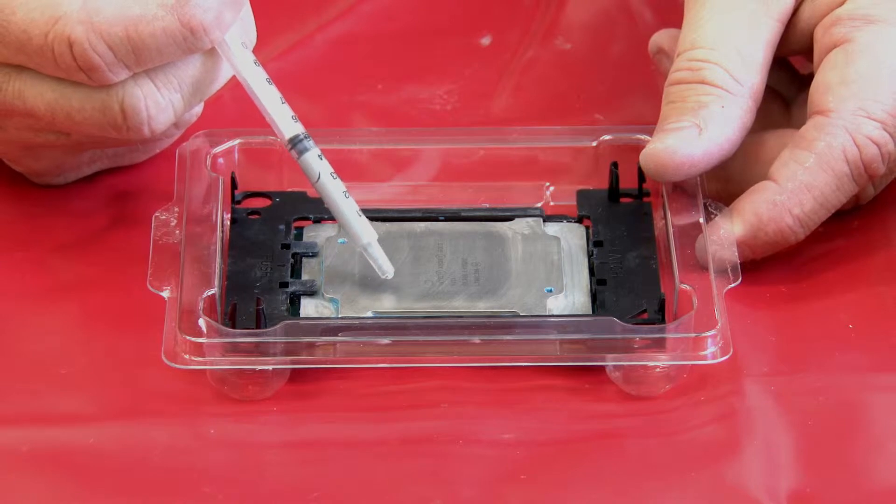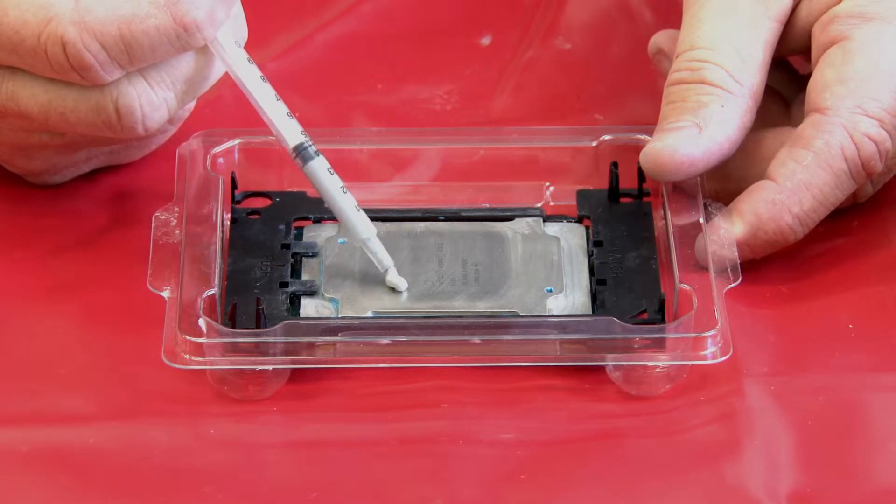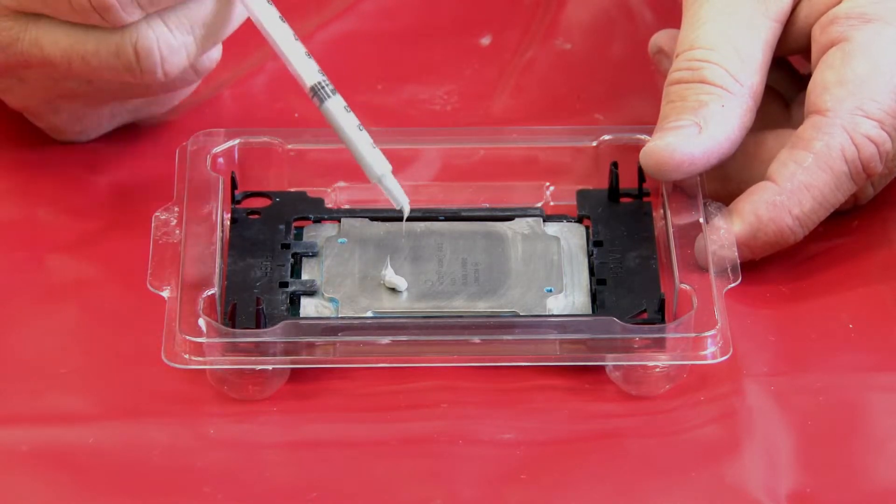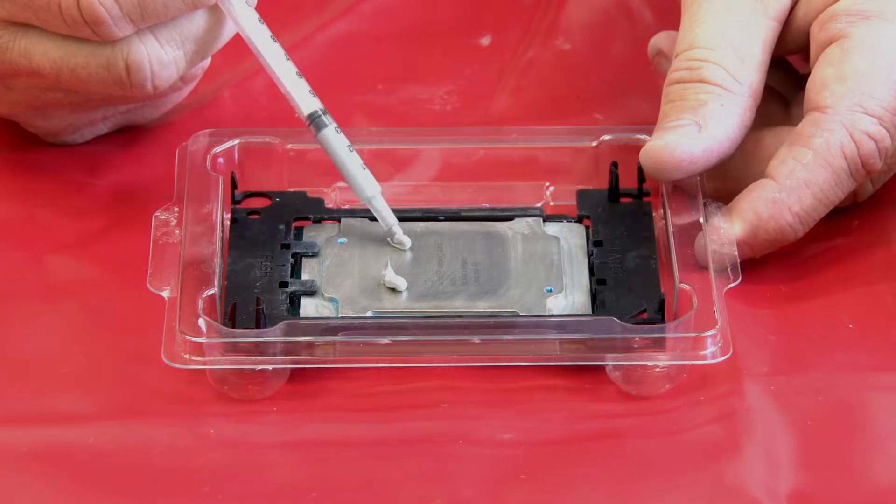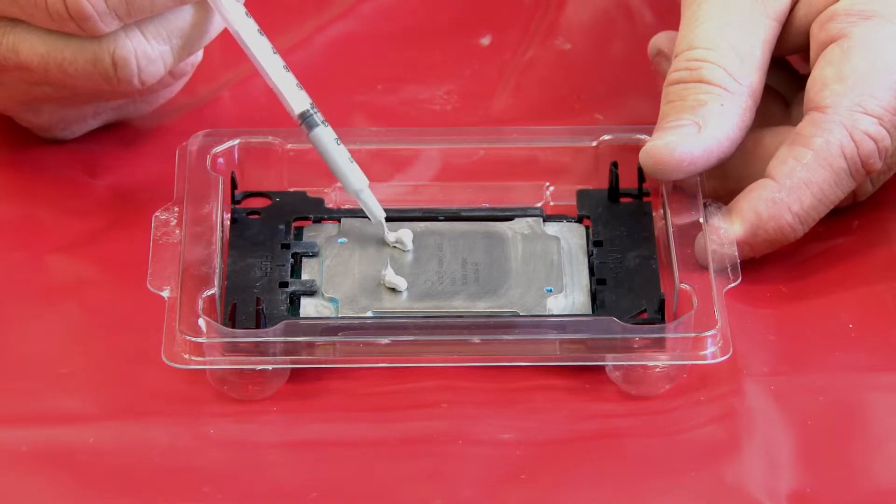Apply the thermal grease on top of the processor with a syringe by forming four uniformly spaced dots, with each dot consisting of about 0.1 milliliters of thermal grease.